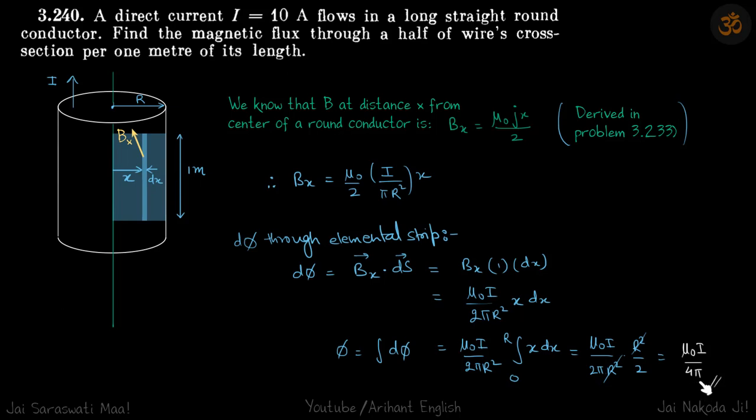Here you can interestingly see that it is independent of radius of the conductor. You can imagine also the current is same. If you increase the radius, the value of B will be less.